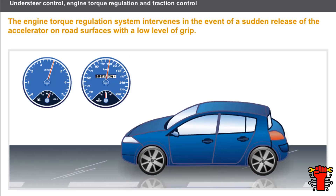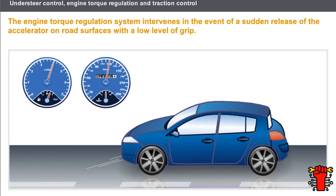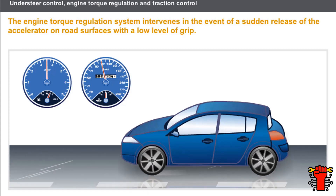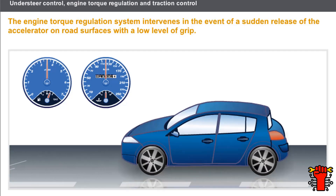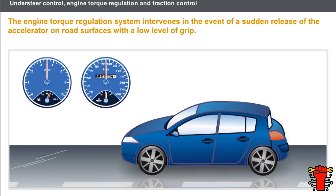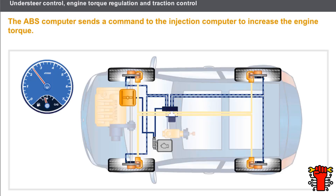The engine torque regulation system intervenes in the event of a sudden release of the accelerator on road surfaces with a low level of grip. The engine braking that occurs when the throttle is released becomes too strong compared to the amount of grip available. The engine torque regulation system limits this phenomenon by increasing the engine torque. At the point when the accelerator is released, the drive wheels suddenly reduce speed under the action of the engine brake. This engine brake has a tendency to lock the wheels, making the vehicle slip on the road surface if there is insufficient grip.